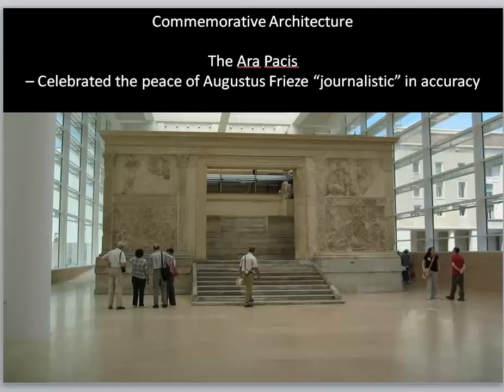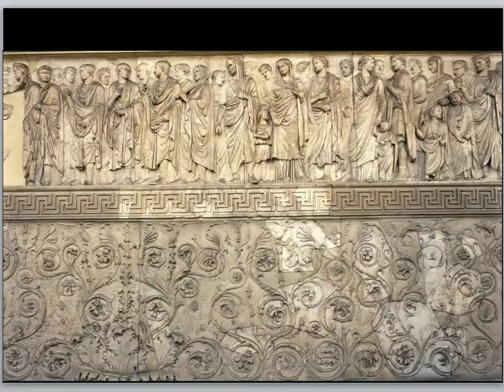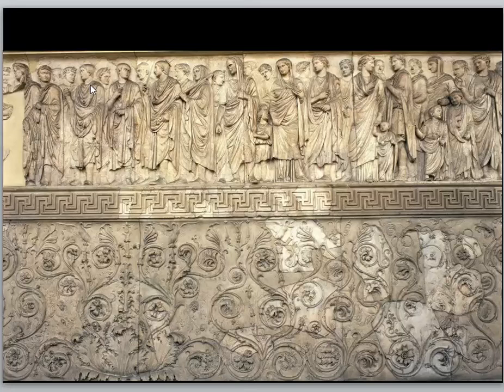On the bottom of the Ara Pacis you have plants; on the top you have a procession of people organized through isocephaly — remember, that means to organize a space with a level of heads. The people can be doing all sorts of things — talking, carrying on — but they are organized visually by the level of their heads. These were actual people at this procession, celebrating Augustus — kind of like a People's magazine or who's who. You can see their faces in the Ara Pacis.